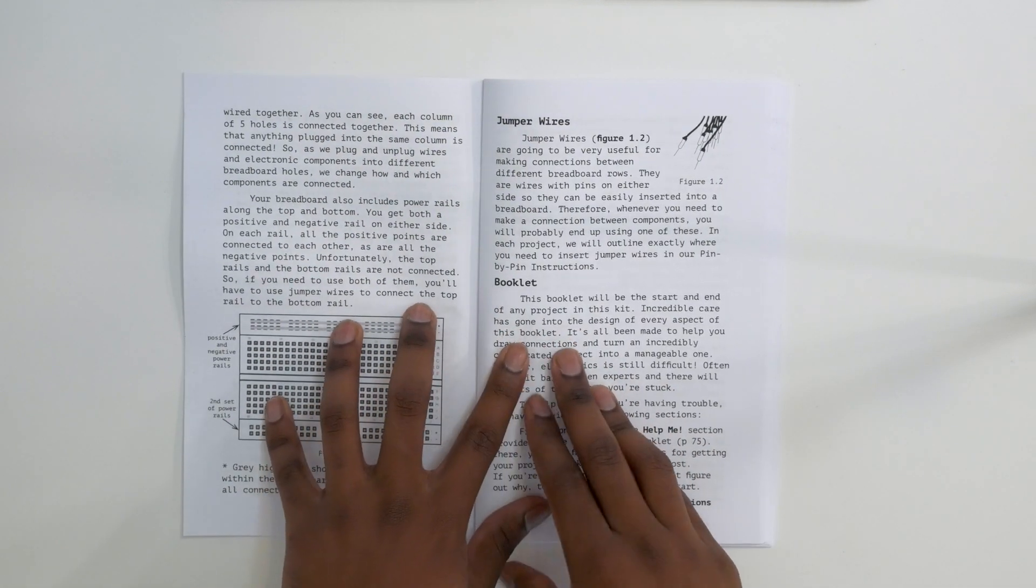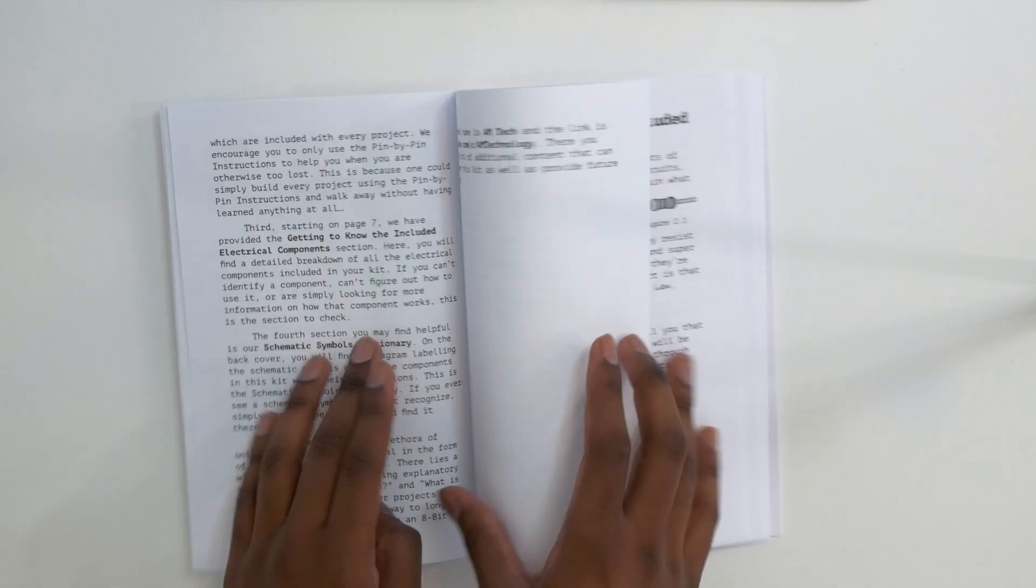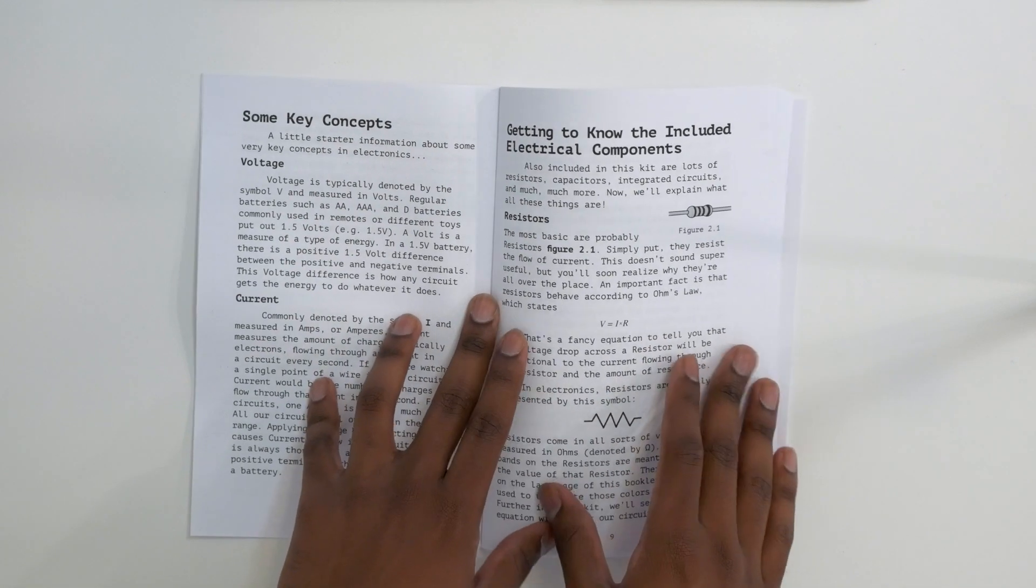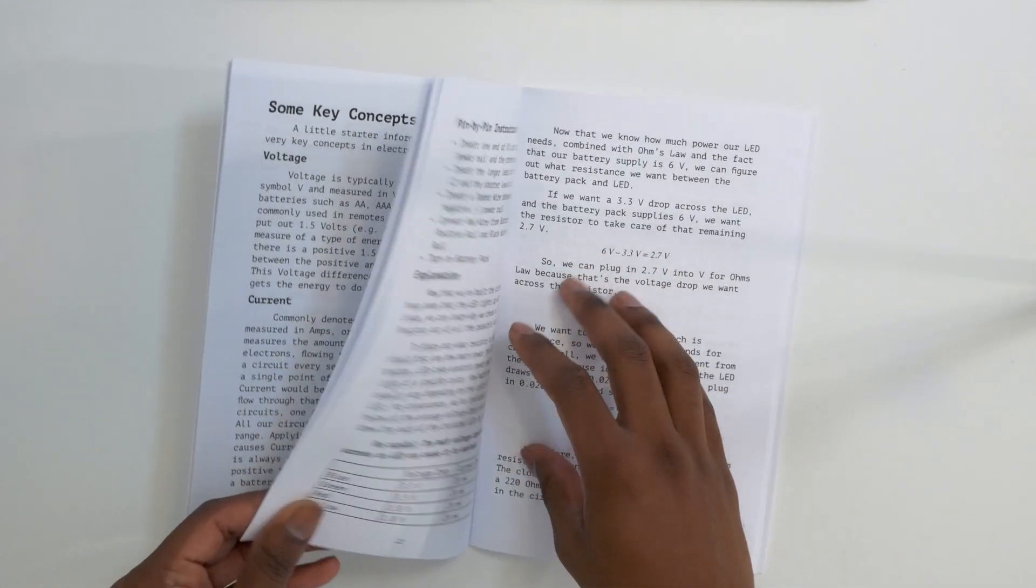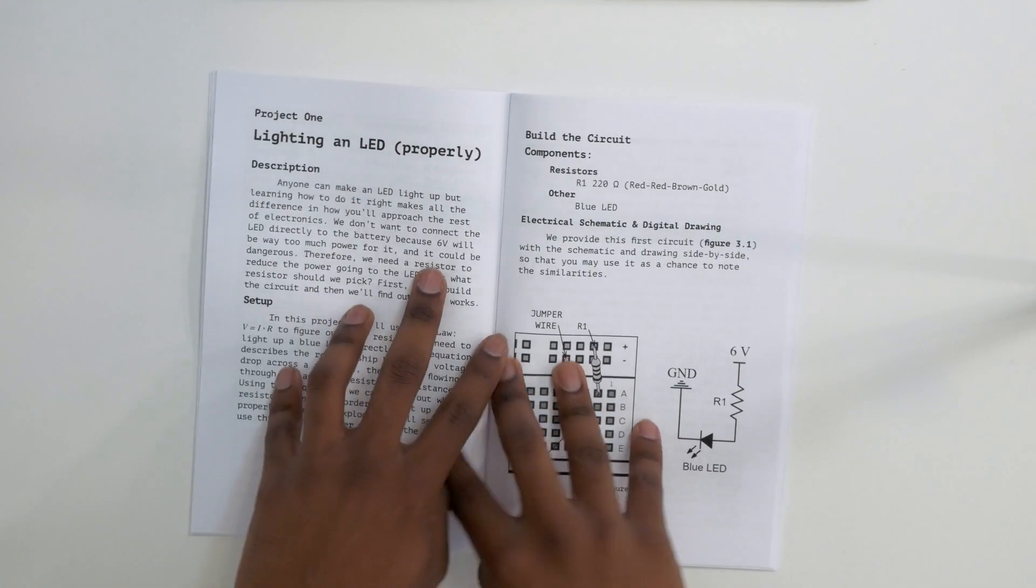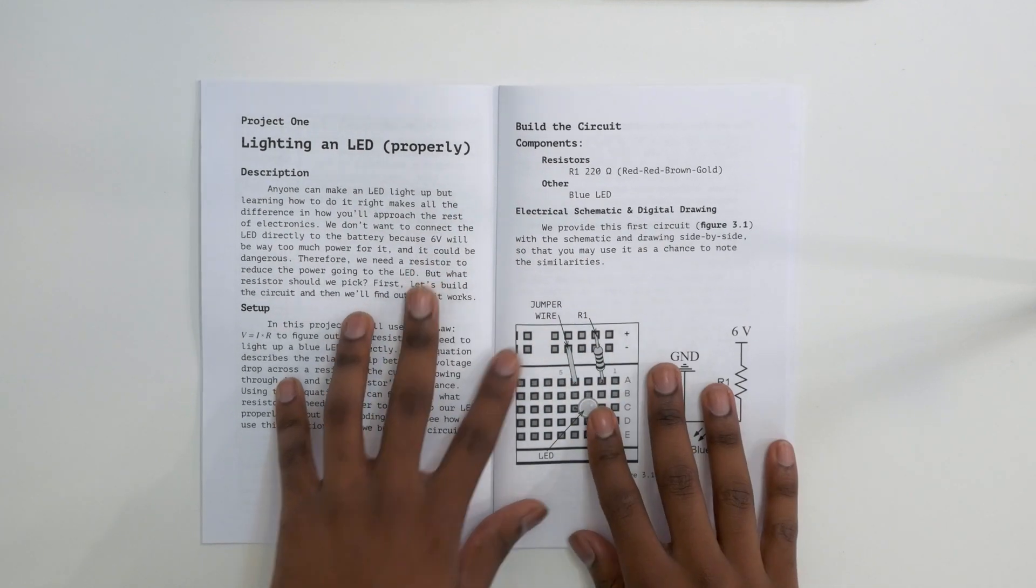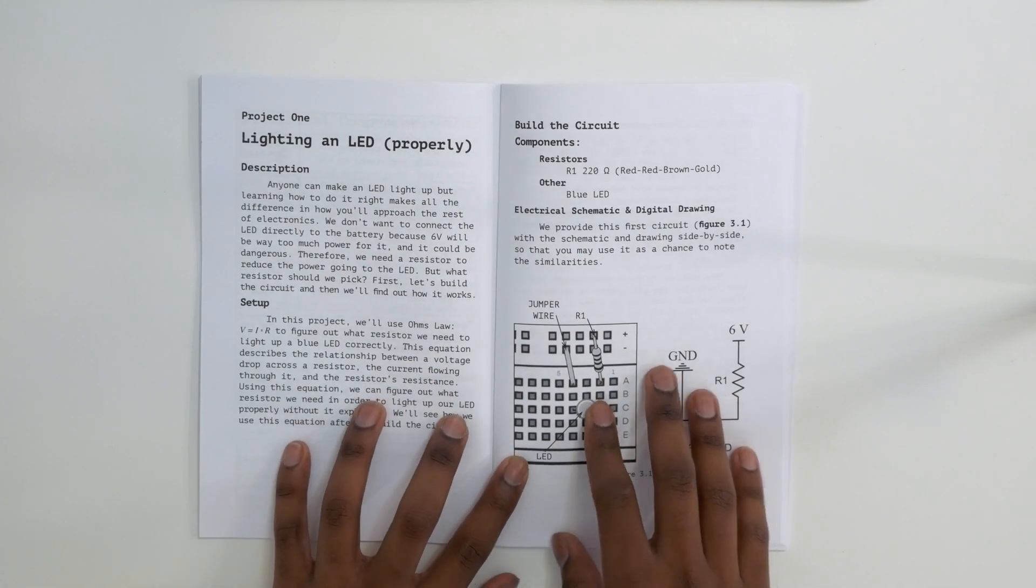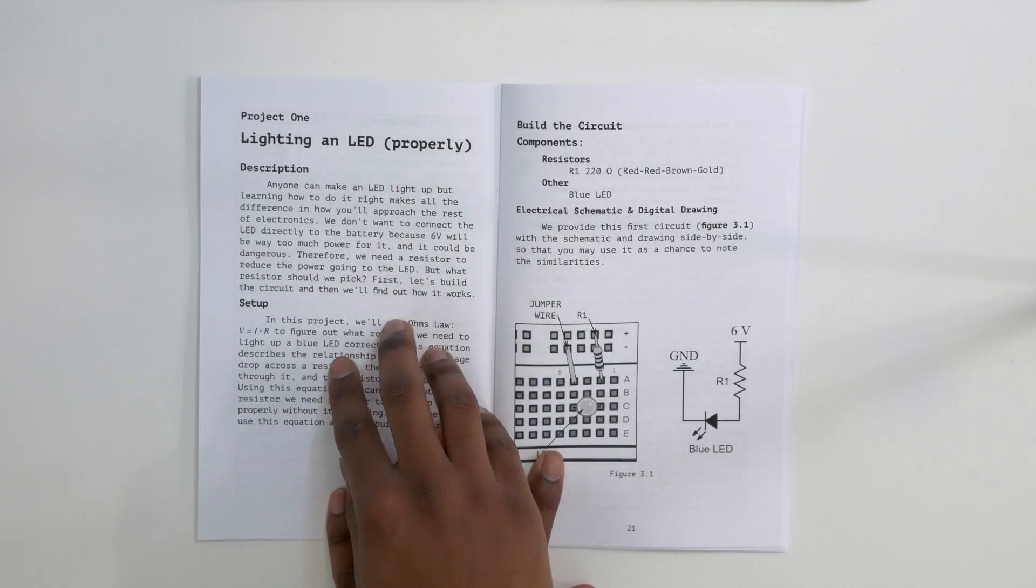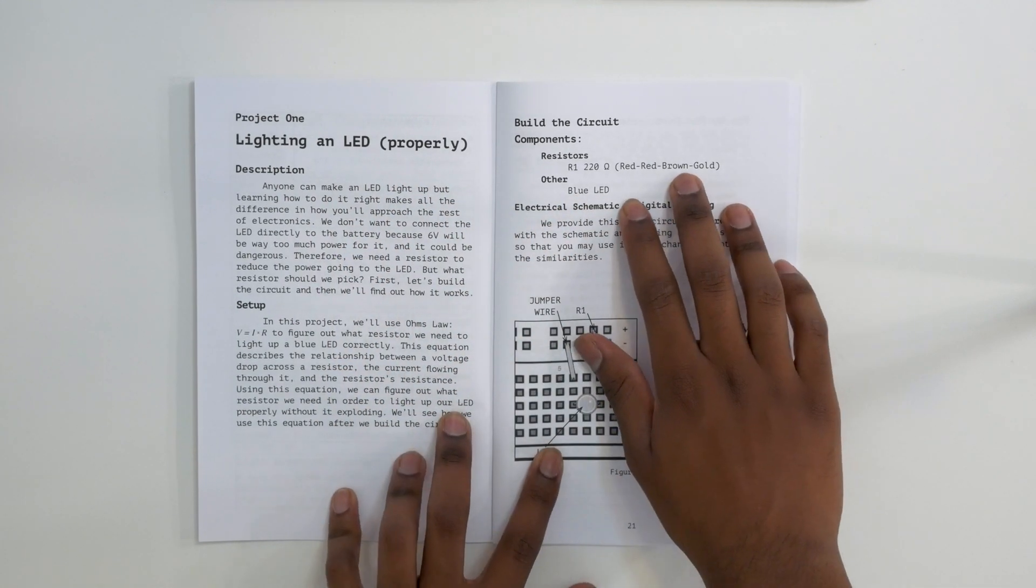Alright, so if we open up the booklet to the first project. Now this is just a prototype booklet that I'm working off of. The one you guys are going to get is going to be slightly different, but for the first project it all looks the same. So if we go here to the first project, you can get a little description of the project, some setup information, all the components you're going to need.